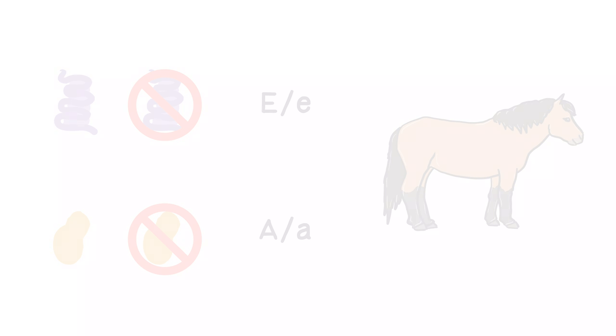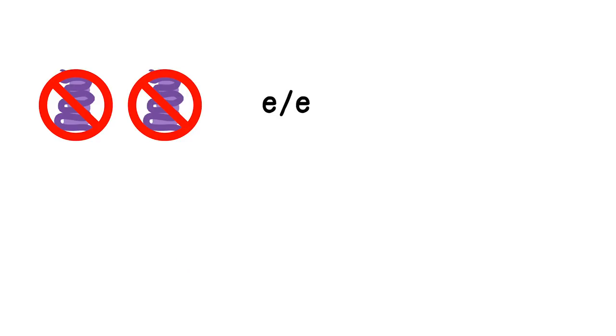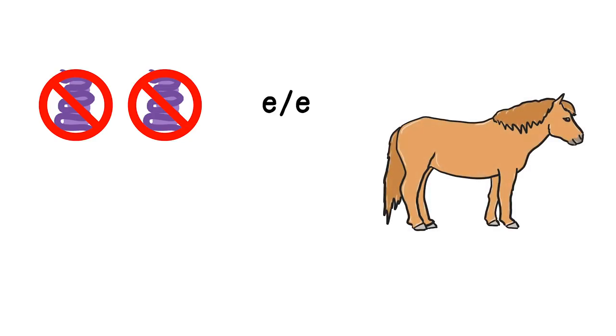But what if both our MC1R genes are broken? The melanocytes don't have any receptors and alpha-MSH will not be able to tell the cell to make black. Therefore, we will get an all red horse. It doesn't matter in this case what we have at the A gene, because when there are no receptors, nothing can bind to them, so it doesn't matter what we have at A.